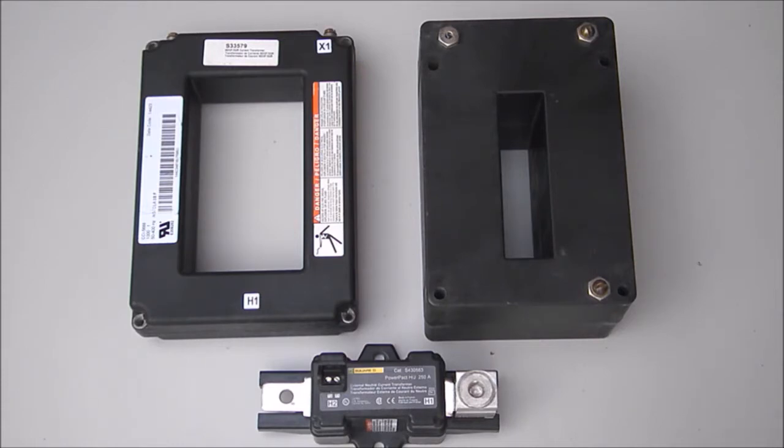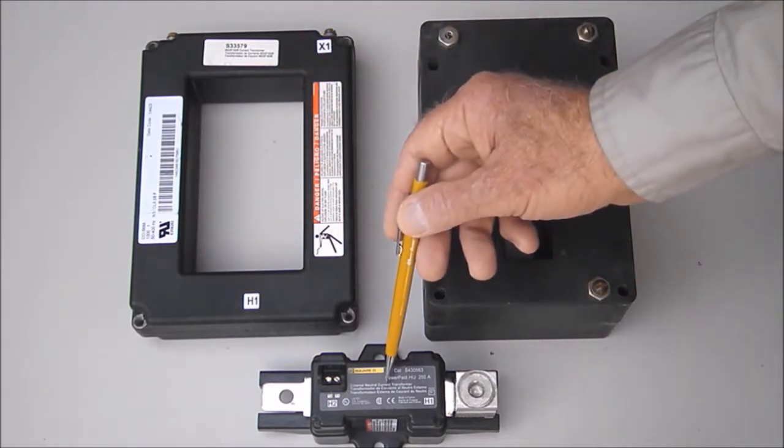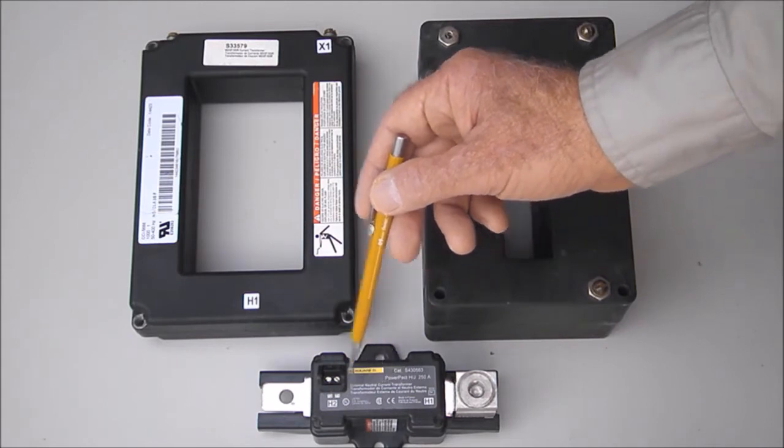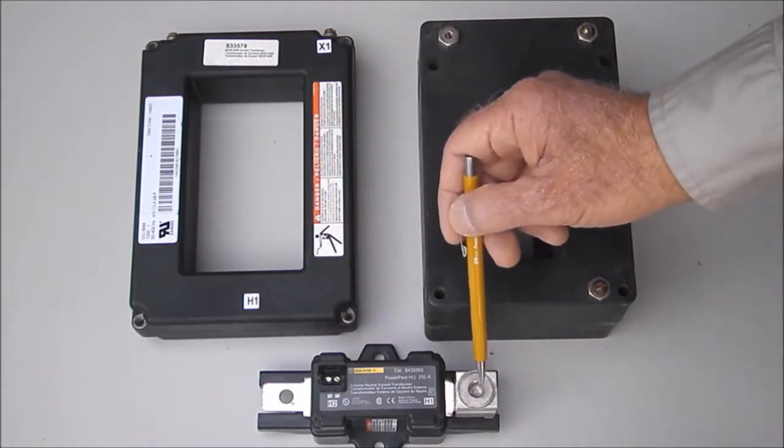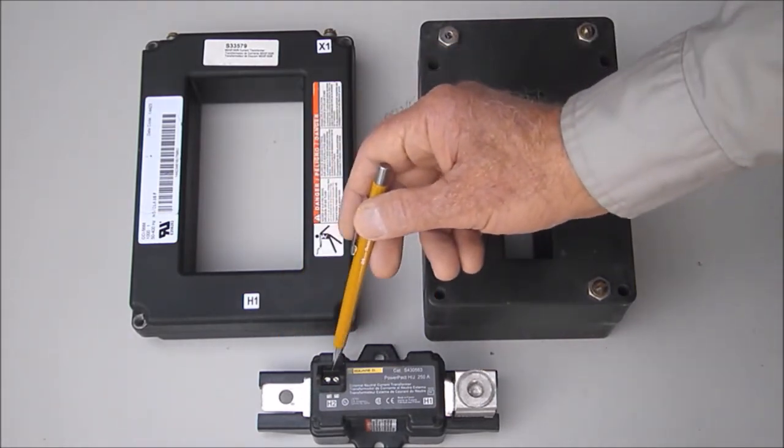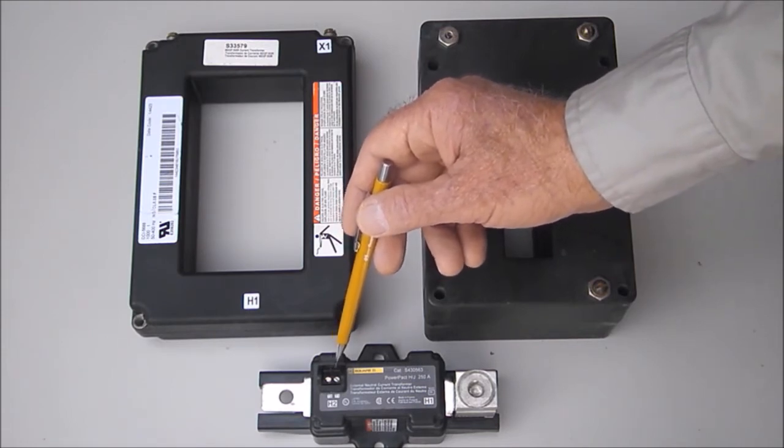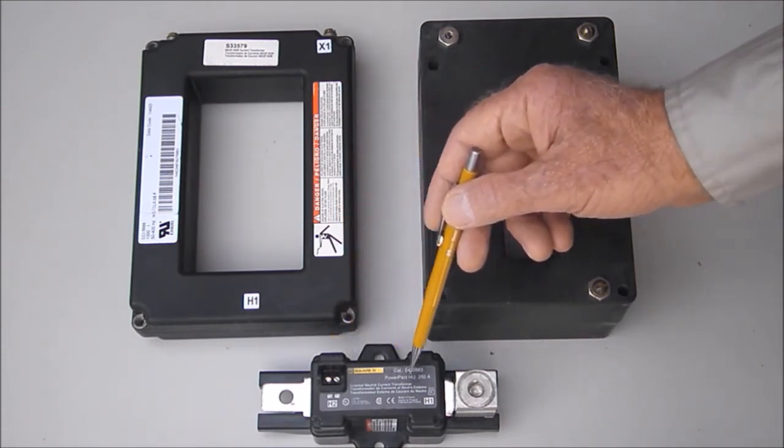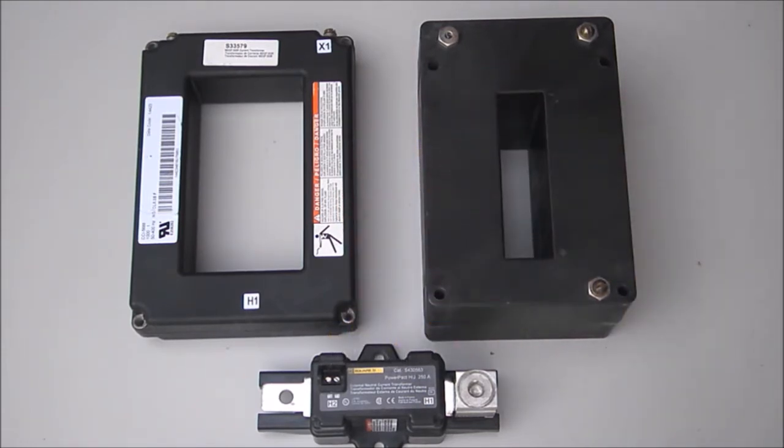Shown here are several types of neutral current transformers. This small one is a standalone bar type bolted in series with a neutral circuit. This NCT will report neutral current information from these two terminals to electronic circuit breaker or ground fault system electronics.